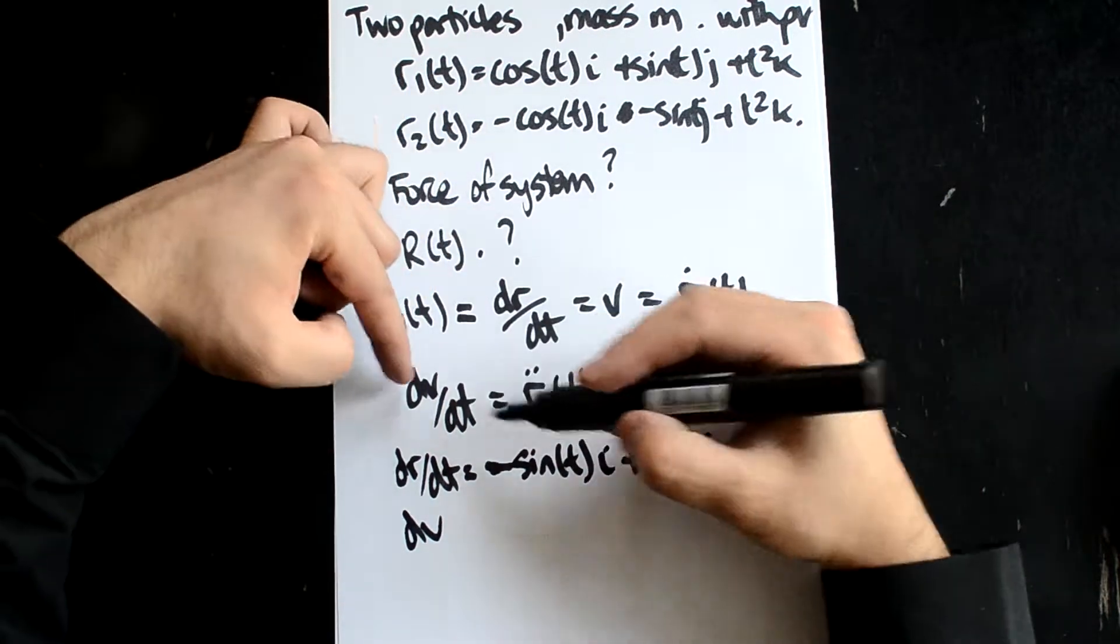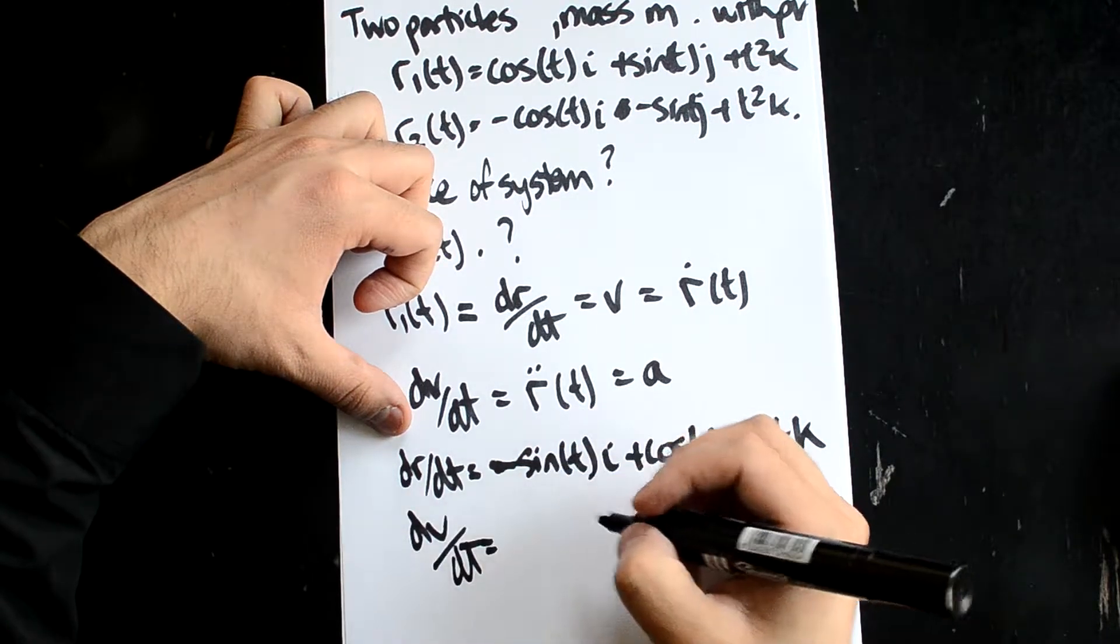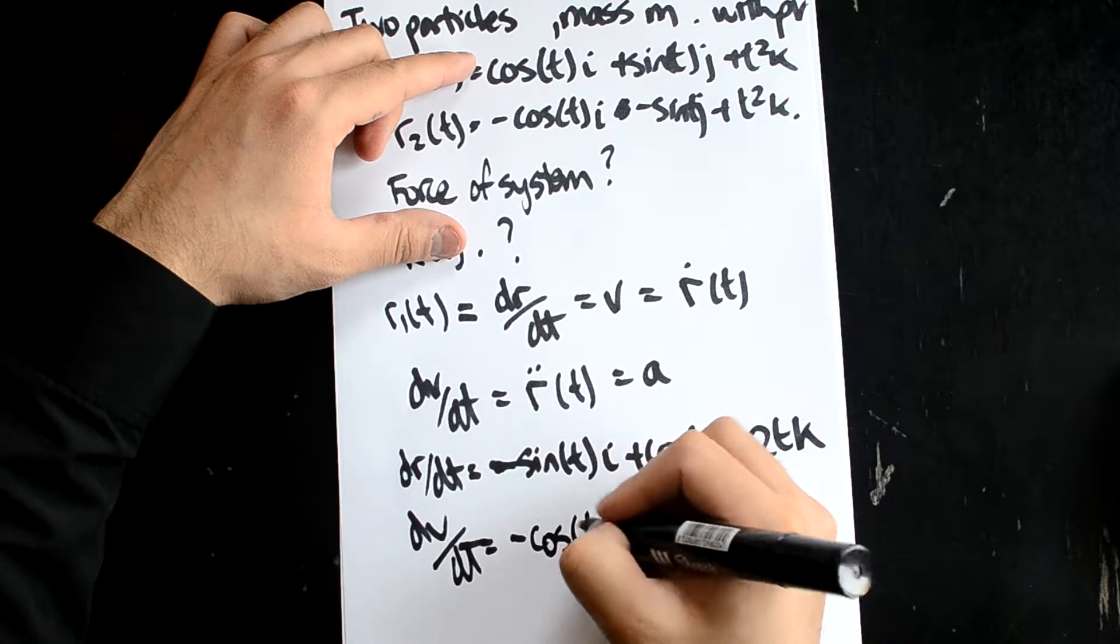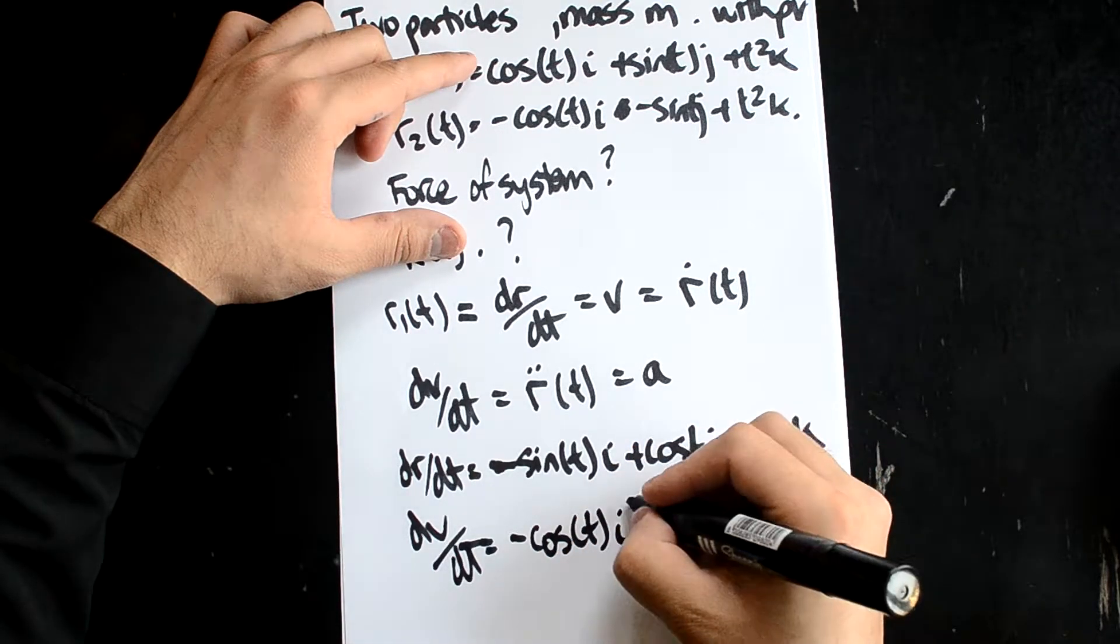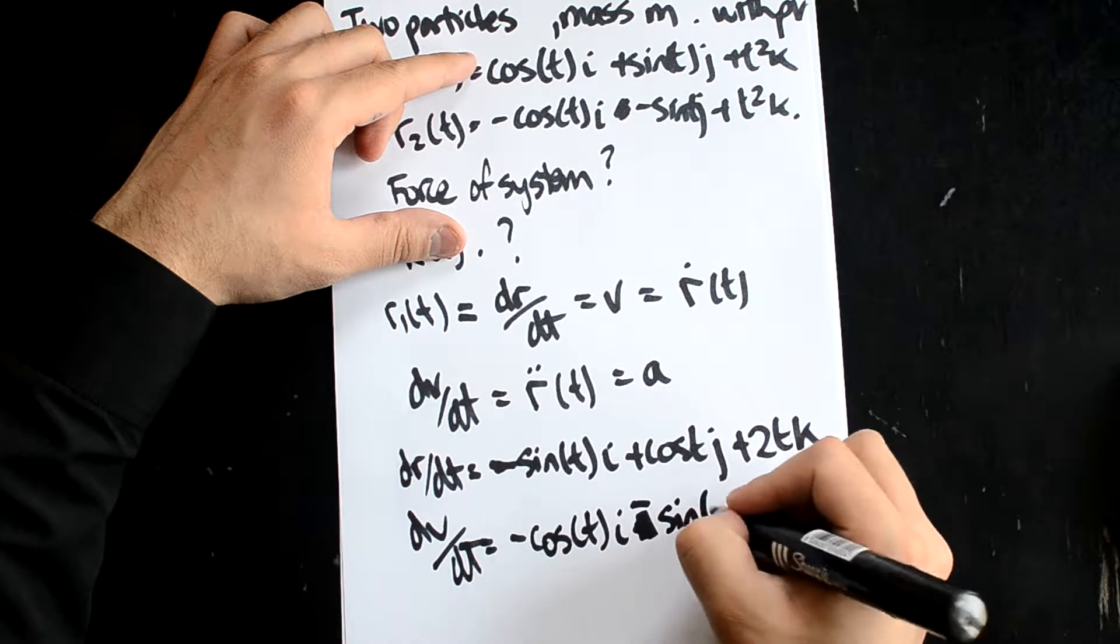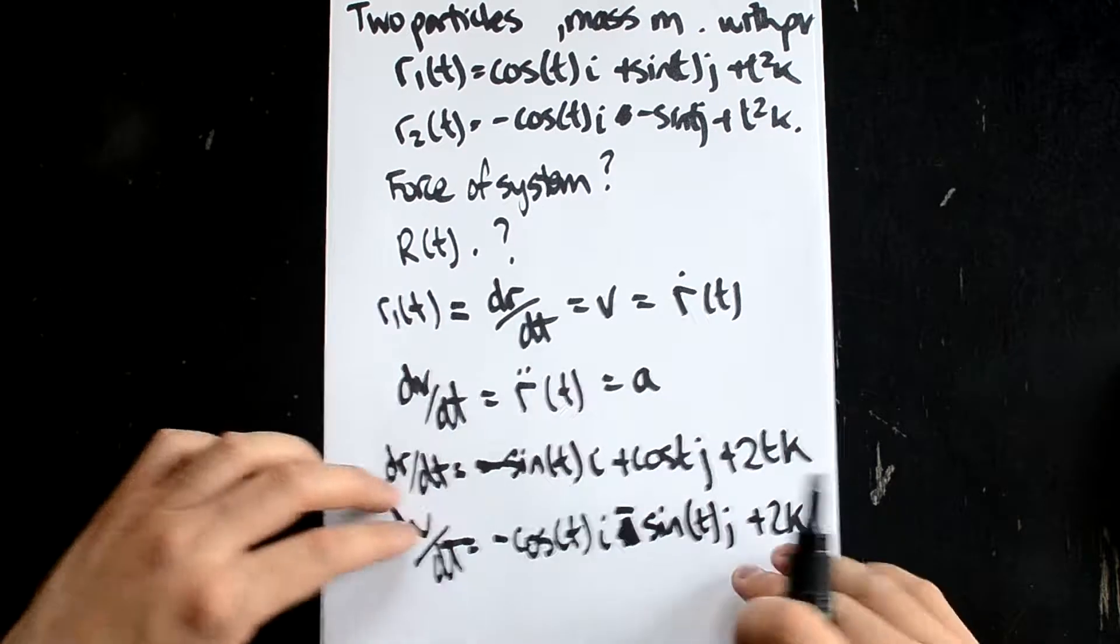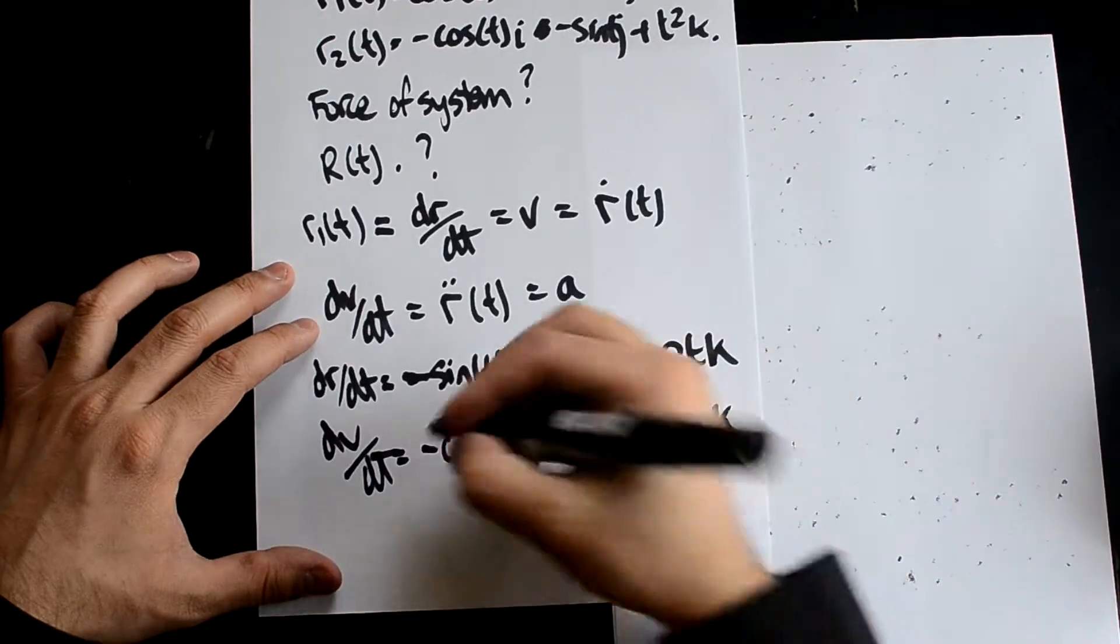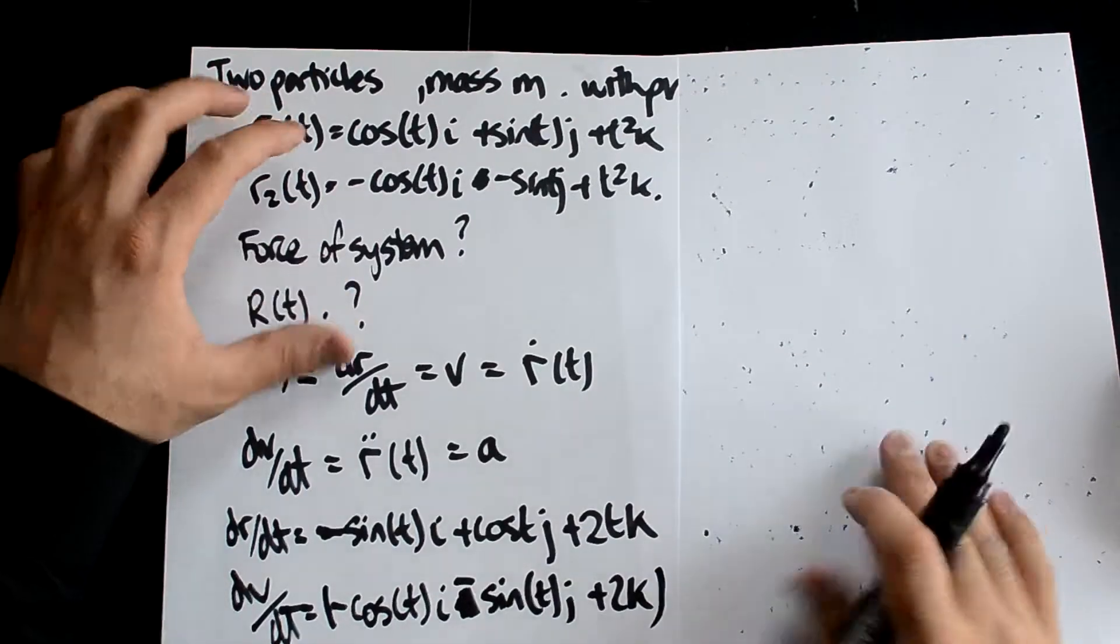So now we can do dv/dt, which is the differential of this, which is going to give us minus cos(t)i minus sine(t)j plus 2k. So there we have our acceleration of the particle R1.